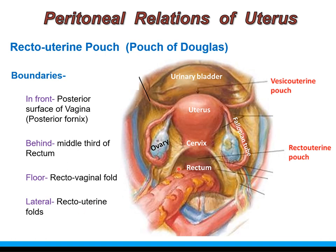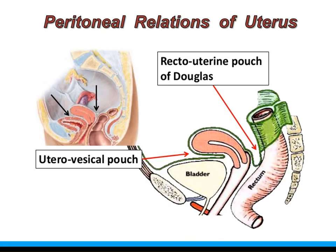In summary, the visceral peritoneum after covering the uterus reflects onto adjacent viscera and forms peritoneal pouches. Anteriorly it forms the uterovesical pouch, and posteriorly it forms the recto-uterine pouch or pouch of Douglas, which is the deepest pouch and most dependent part of the female peritoneal cavity.